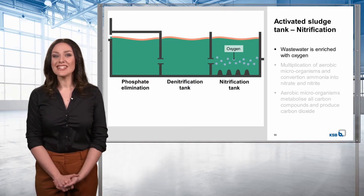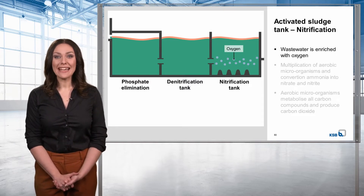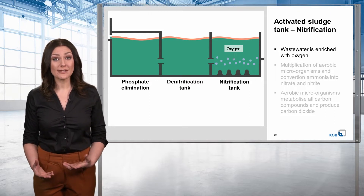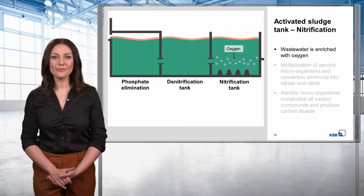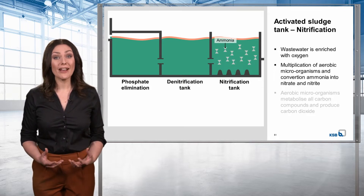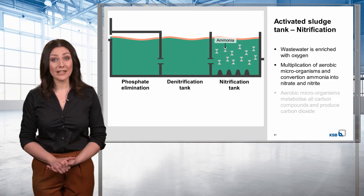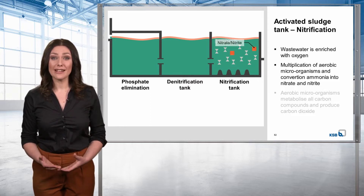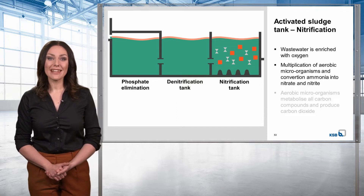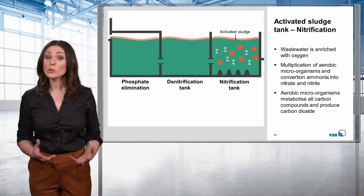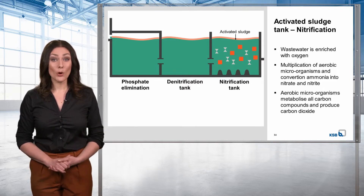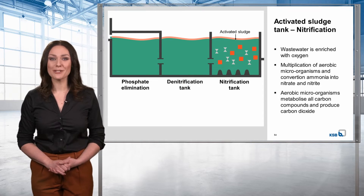The last stage is that of nitrification. Here, the wastewater is enriched with oxygen that is supplied by aeration units that are usually fitted to the floor. This creates a favorable environment for aerobic microorganisms that convert ammonia, or urine, into nitrate and nitrite — also referred to as nitrification. They also metabolize all carbon compounds and produce carbon dioxide. In these conditions, the aerobic microorganisms keep multiplying.